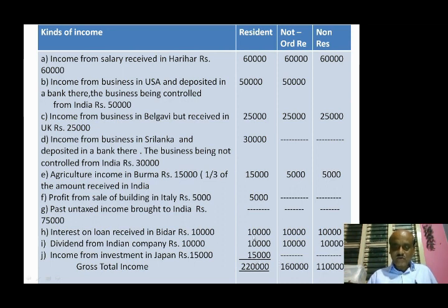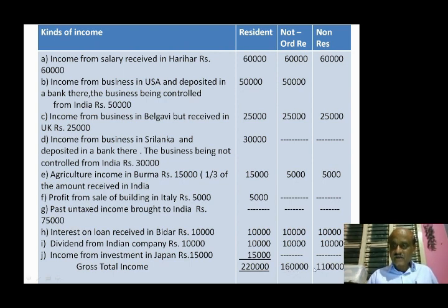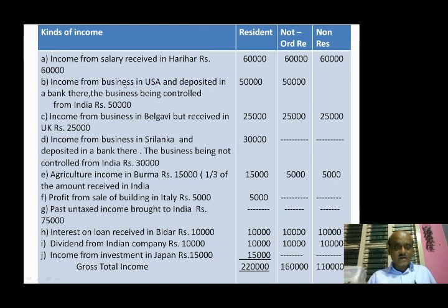Adding up the total: resident column total is 2,20,000; not ordinarily resident total is 1,60,000; non-resident total is 1,10,000. So resident's tax liability is on 2,20,000; NOR's is on 1,60,000; and non-resident's incidence of tax is on 1,10,000.